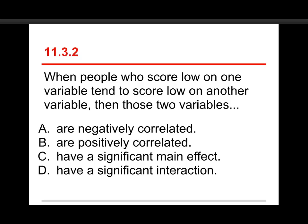Alright, number 2. When people who score low on one variable tend to score low on another variable, then those two variables: A, are negatively correlated, B, are positively correlated, C, have a significant main effect, and D, have a significant main interaction.